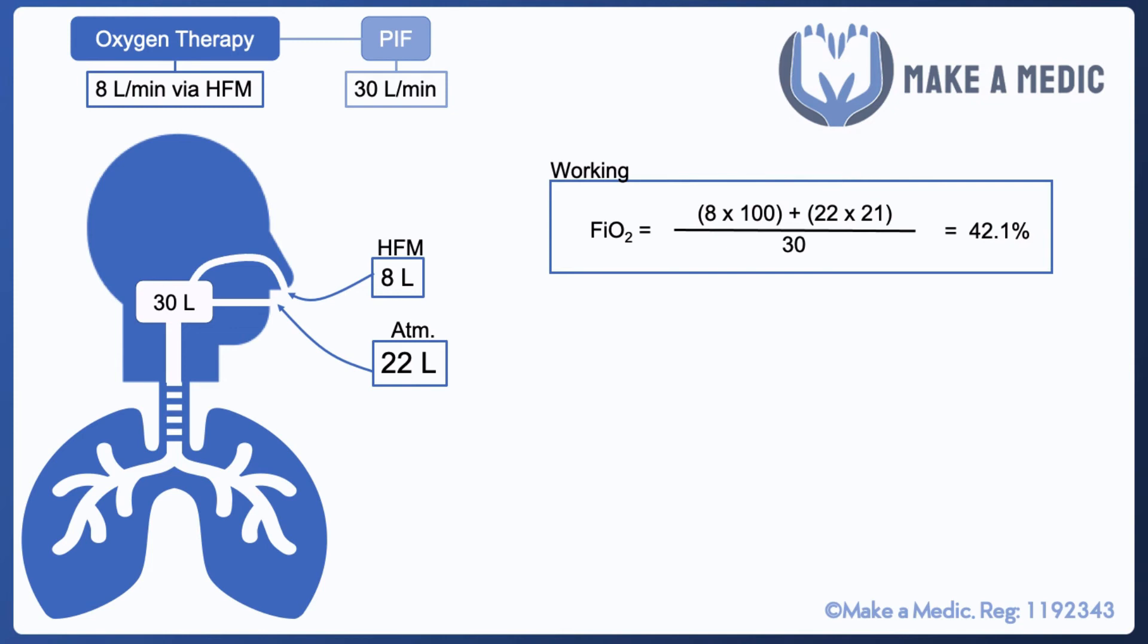This will lead to an increase in their oxygen saturations and hypothetically let's say that leads to a decrease in their drive to breathe. Their peak respiratory flow rate now goes down to 20, but we keep the Hudson face mask on. Again, you can see what's happening here: 8 liters by the Hudson face mask and only 12 liters from the atmosphere, and so the FiO2 has gone up even further.